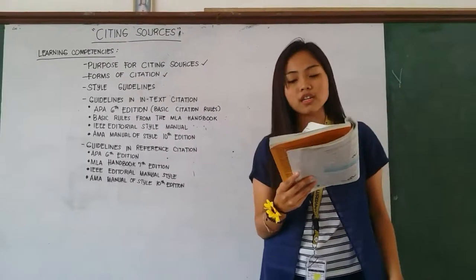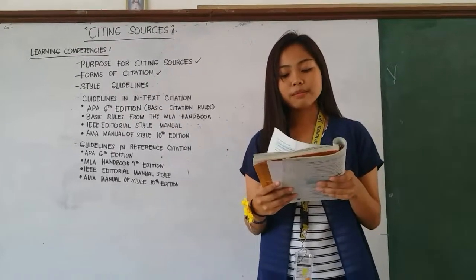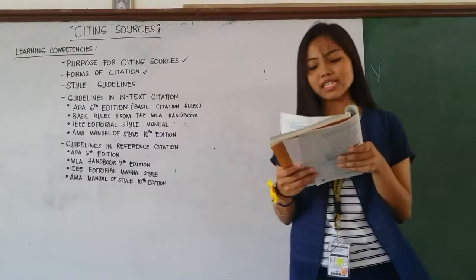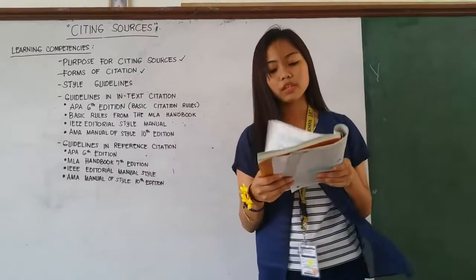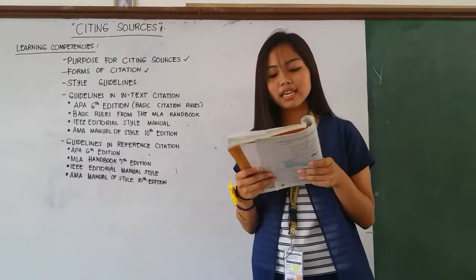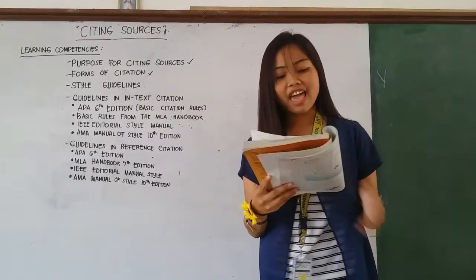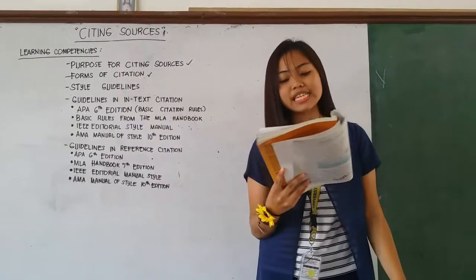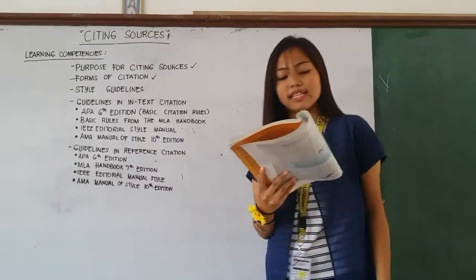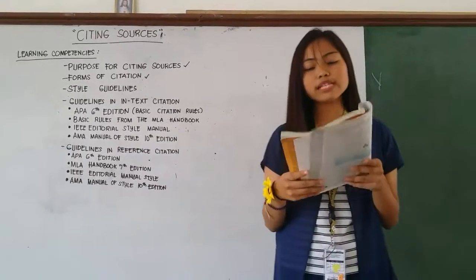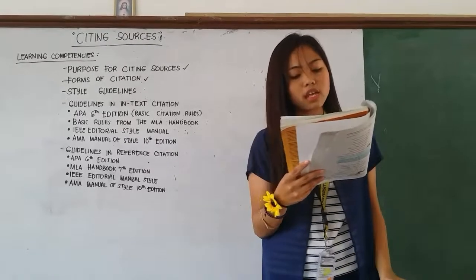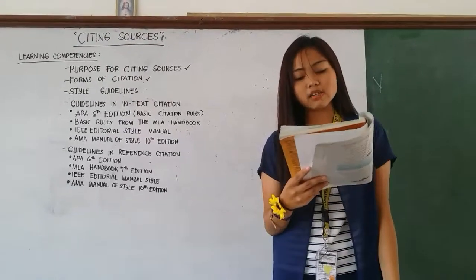APA is used for Psychology, Education, Hotel and Restaurant Management, Business, Economics, and other social sciences. MLA is used for Literature, Arts, and Humanities. IEEE is used for Engineering. AMA is used for Medicine, Health Science, and Agricultural Science. Chicago style is used for reference books, journals in political science, newspapers, magazines, and journals.